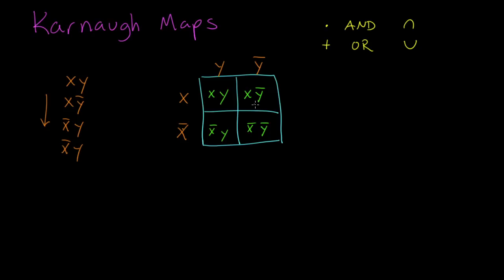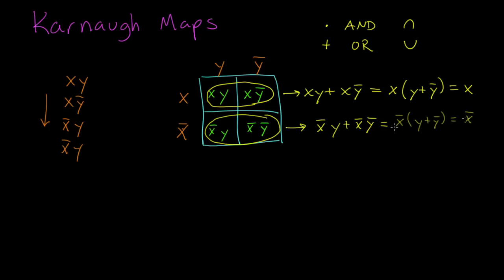This top row is the union between x, y and x, not y. Using the distributive property this simplifies to just x so this entire row is represented by just x. Likewise this entire bottom row is the union of not x, y and not x, not y which simplifies to just not x. The whole left hand column simplifies to just y, and the whole right hand column simplifies to not y.